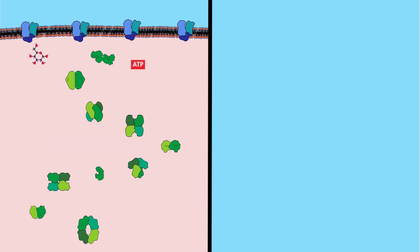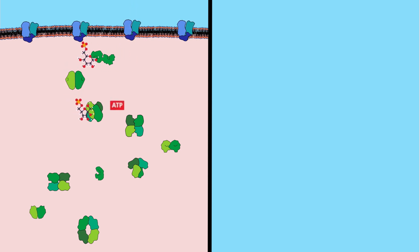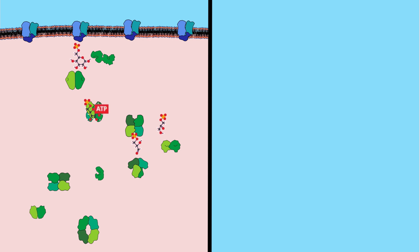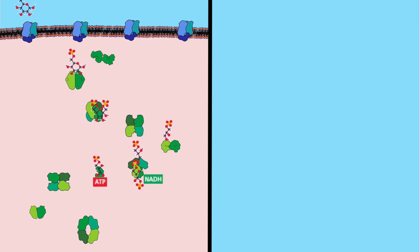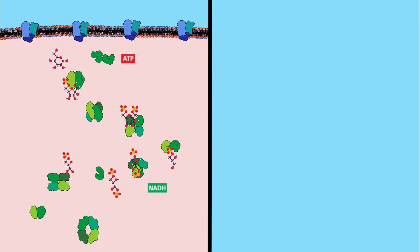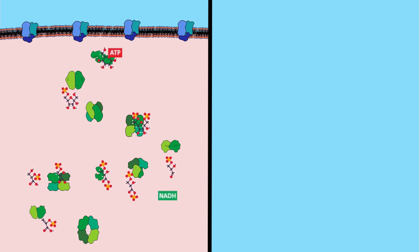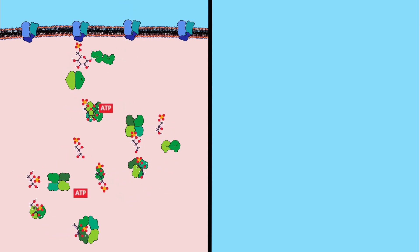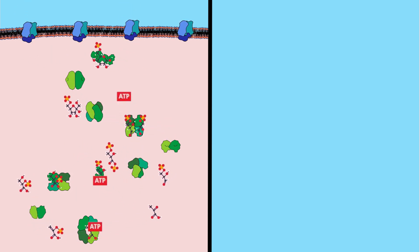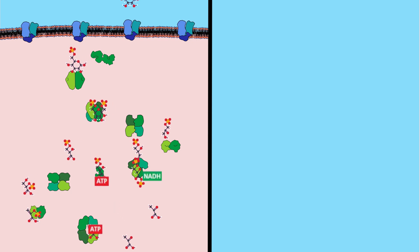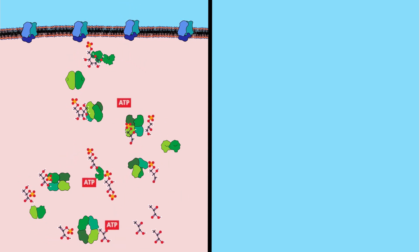These 10 proteins make up the glycolysis pathway. When the cell expends energy it depletes its ATPs, and to recover them the protein phosphofructokinase is activated. This opens the flow for glucose molecules to be converted into pyruvate and chemical energy in the form of ATPs and reduced NADH.